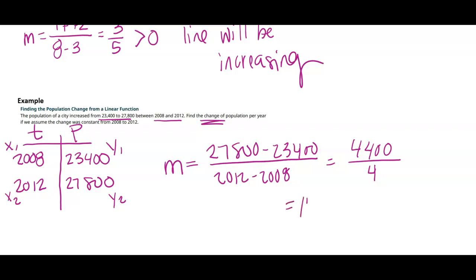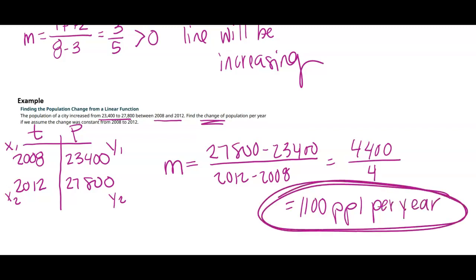I could divide, so I get 1,100 people per year as my average rate of change between those two years.